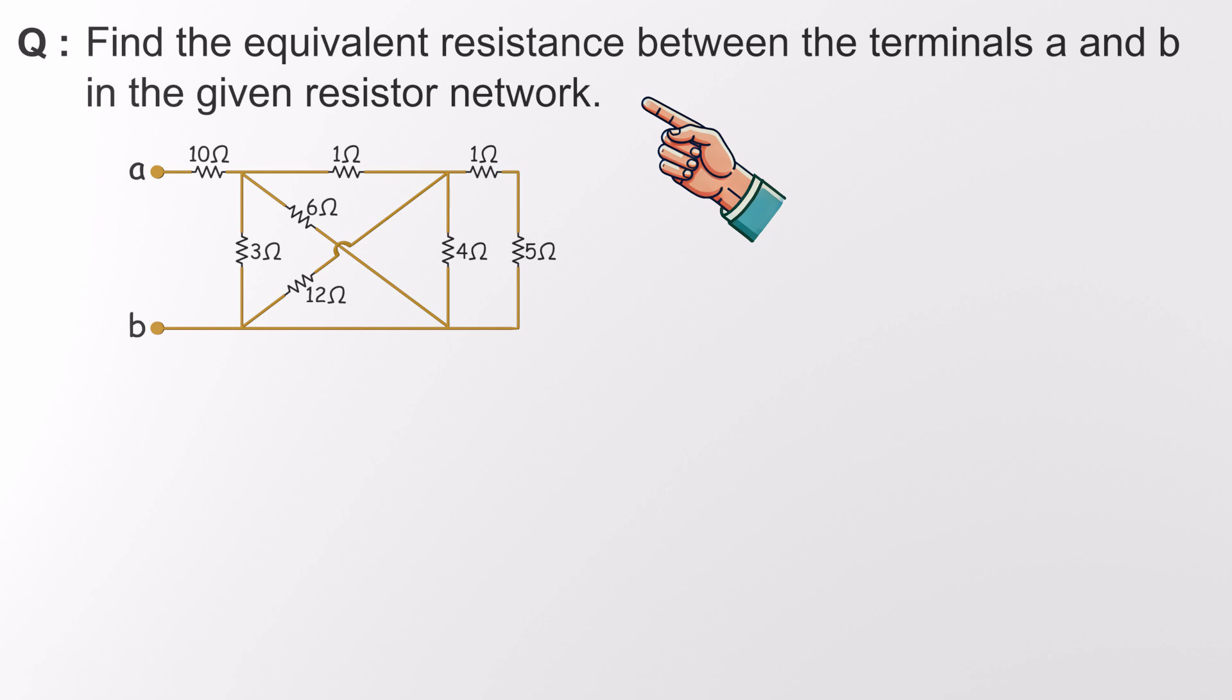Find the equivalent resistance between the terminals A and B in the given resistor network. To solve this problem, we need to simplify the resistor network by combining resistors that are connected in series or parallel, step-by-step, until we're left with a single equivalent resistance.